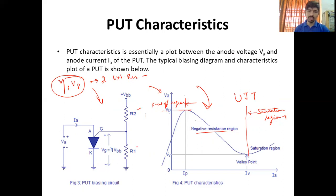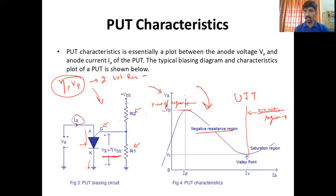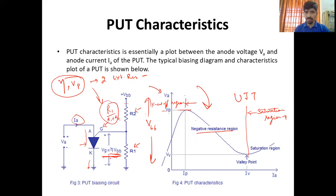वो resistors R1 and R2 हैं — this is basically a voltage divider circuit जो gate को supply देता है ताकि यह turn on हो सके। जब यह turn on होगा, तो anode current cathode side से pass करेगा। Gate voltage VG = eta × VPP, और eta = R1 / (R1 + R2)। तो eta को हम control कर सकते हैं, and that means VG को control कर सकते हैं — तो उसके accordingly यह turn on होगा।